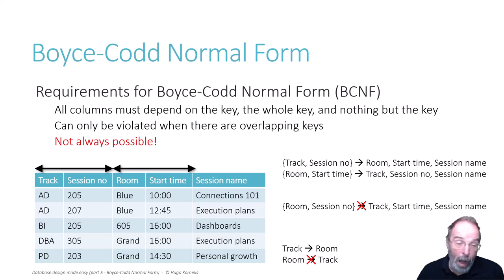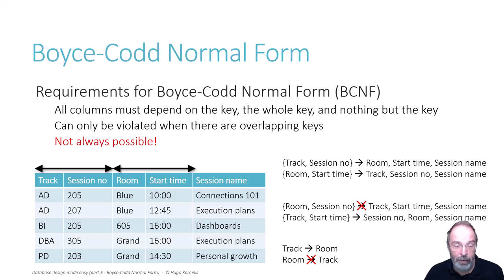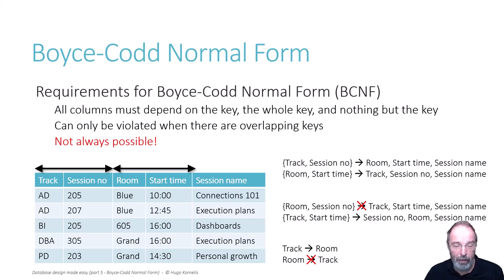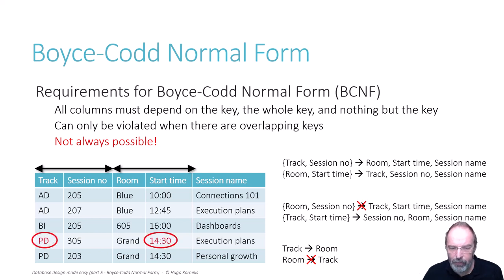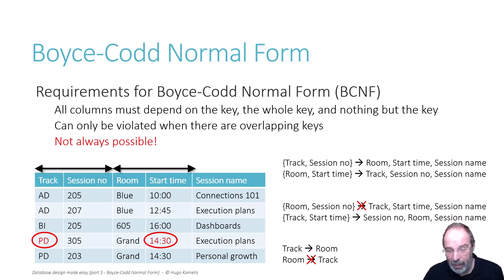However, the combination of track and start time still does determine session number, room and session name, because track still determines the room. So if you look at track PD and start time 14:30, because PD is always in grant, it must be grant and 14:30. So if we reassign the execution plans session to the PD track and reschedule it for 2:30, this is already not allowed by the key on room and start time. And there is no way we can ever get two sessions with the same track and the same start time, because if it's the same track it is the same room. So there is definitely a key on the combination of track and start time.